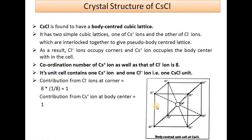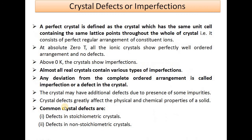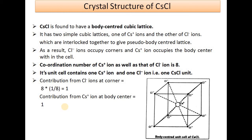The contribution from Cl- ions at corners = 8 × (1/8) = 1, and the 1 Cs+ ion at the body center contributes 1. Therefore there is 1 Cs+ and 1 Cl- unit per unit cell. This concludes the crystal structure of caesium chloride, and the next topic will be continued in the next lecture.